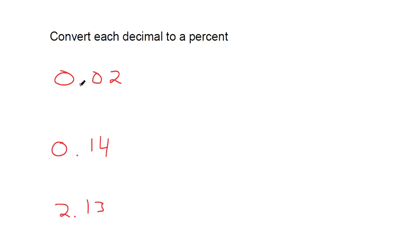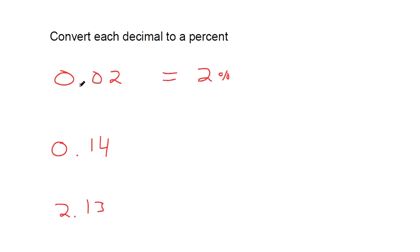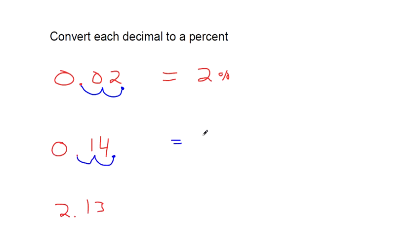0.02 is 2% as a decimal because we have to move the decimal place two places to the right. So move the decimal two places to the right, and then you've got your percentage.